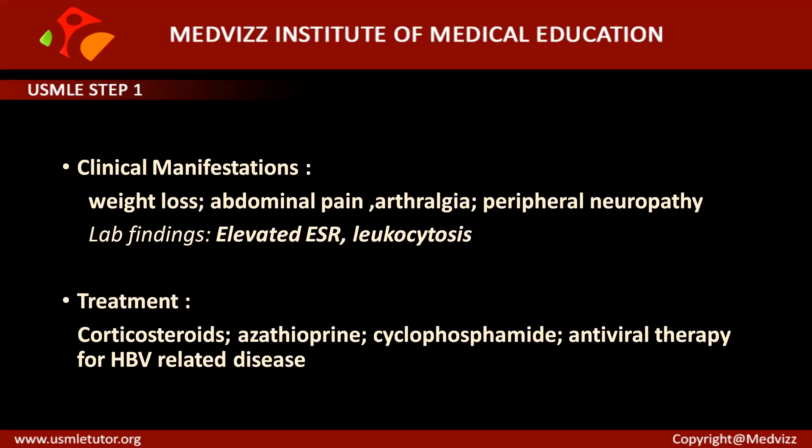Lab findings in PAN: due to systemic chronic inflammatory condition, elevated ESR and leukocytosis are always present. Treatment involves corticosteroids — which is why the patient was started on prednisone. Azathioprine or cyclophosphamide may also be used. Importantly, antiviral therapy is recommended when PAN is HBV-related, since HBV infection is associated with 30% of PAN cases.